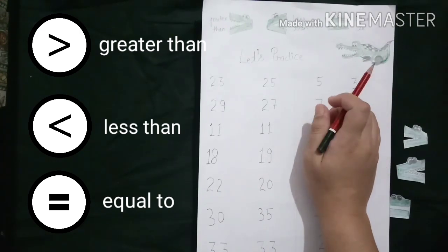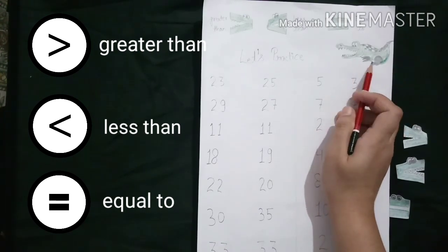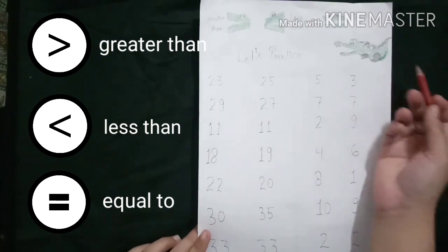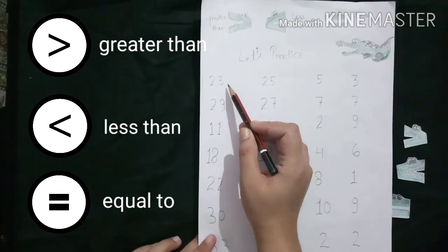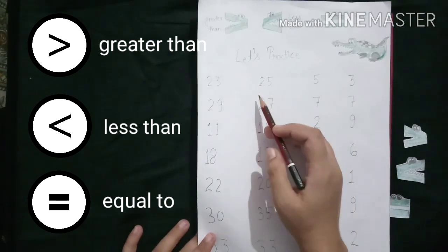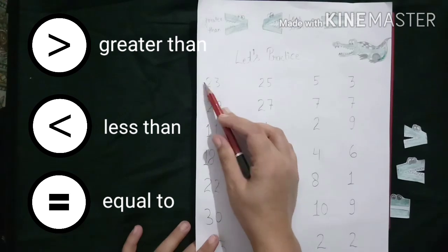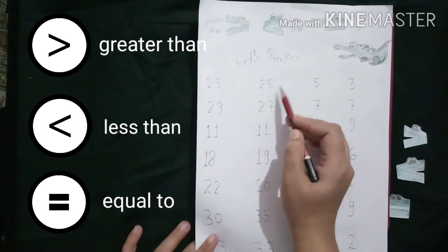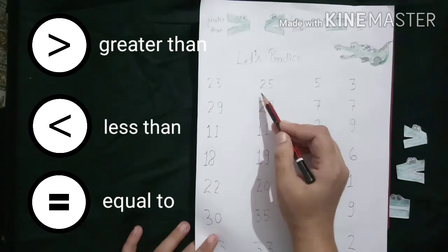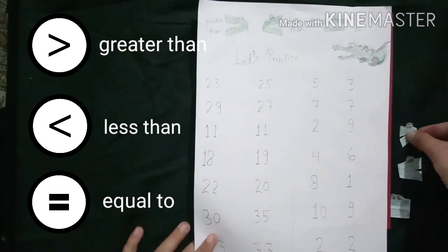We have an alligator here — her name is Alina. Alina always wants to eat the bigger or greater number. We will practice greater than, less than, and equal to by feeding Alina the greater number. This number is 23 and this number is 25.